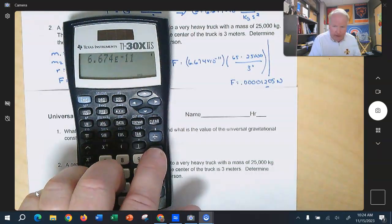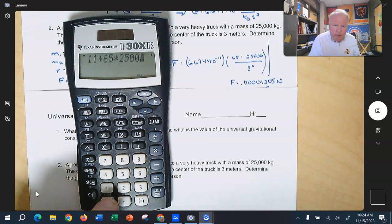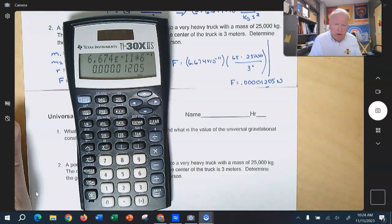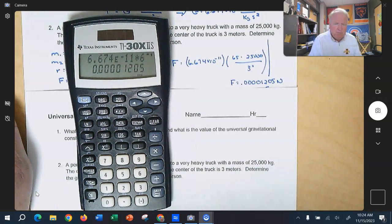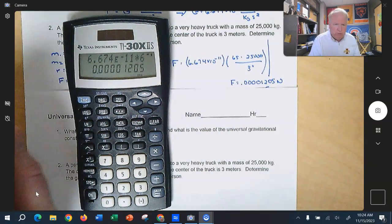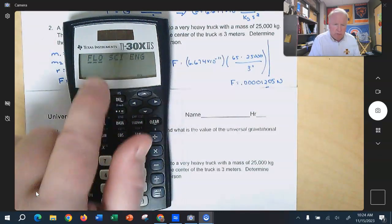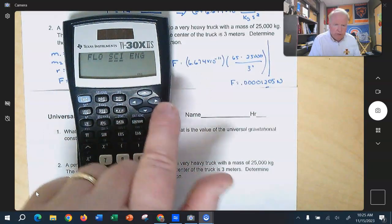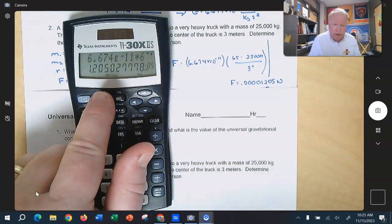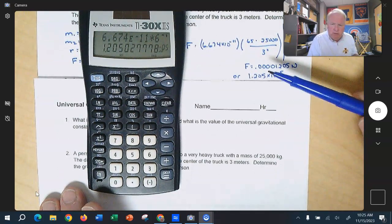So I put in the gravitational constant times 65 times 25,000, divided by three, and hit the square button, and we get our number. Now, you see that this number comes out as not scientific notation. That's because there's enough space for the calculator to show it, but if we want to see it in scientific notation, it's very simple. We hit the second button. We hit this button right here, and then see it says flow, which is floating decimal scientific notation and engineering. And so we just push this over here and hit enter, and now we get it in scientific notation. 1.205 times e to the 5th, which is e to the negative 5th, and so that's 10 to the negative 5th.